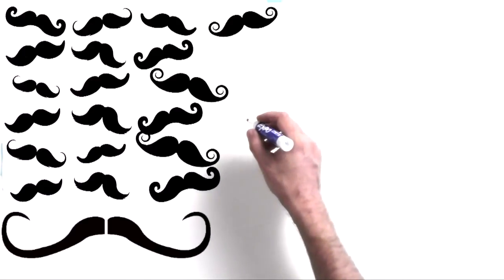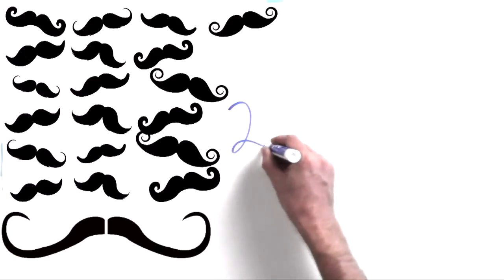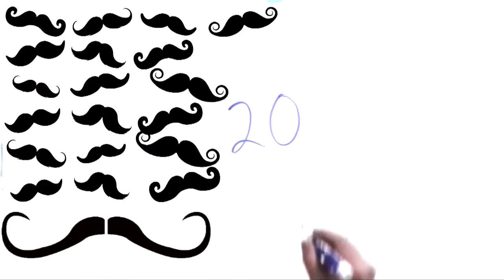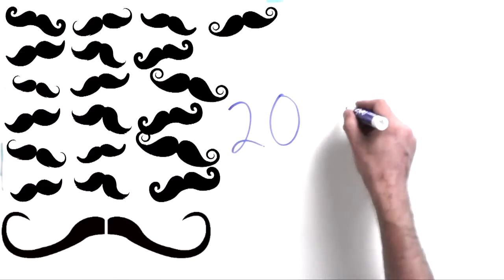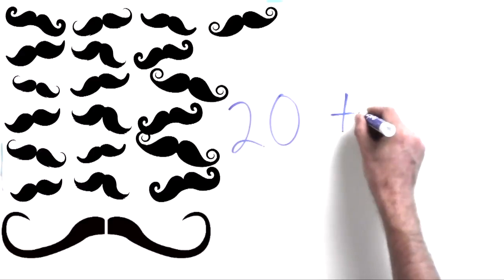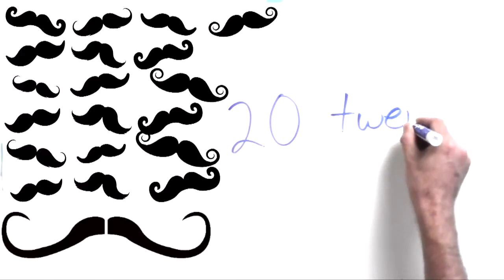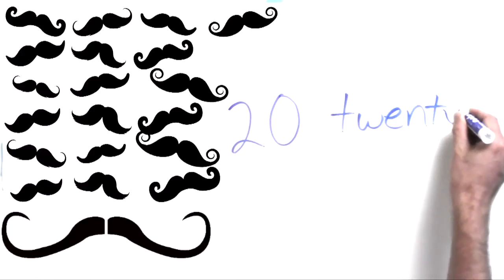20 mustaches. That's a lot. But here's how you write the number 20, a 2 and a 0. And here's how we write the word, twenty.